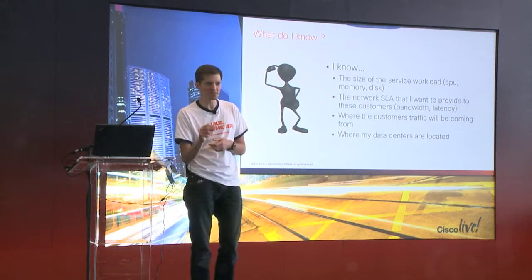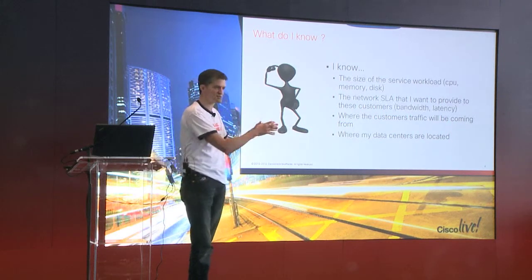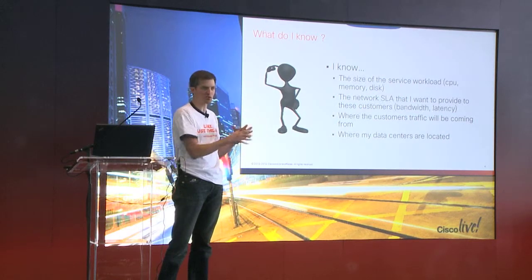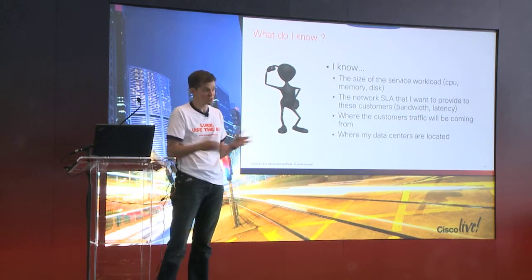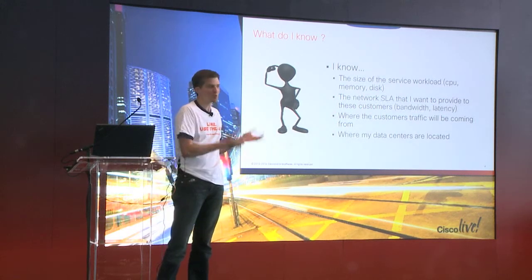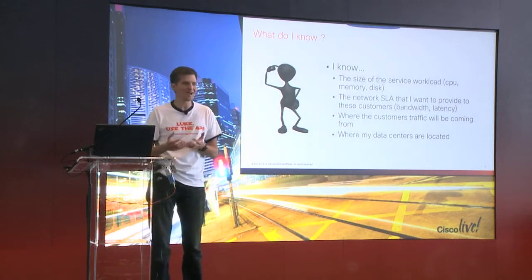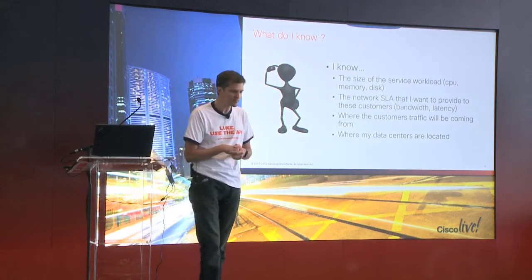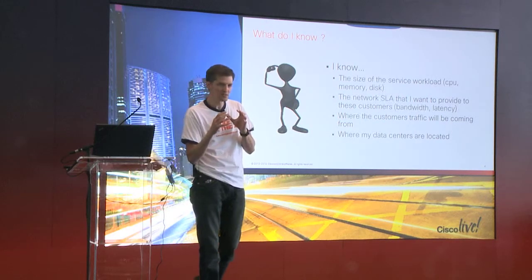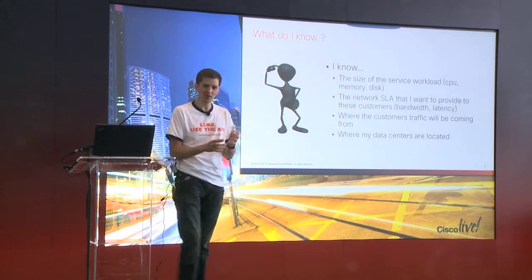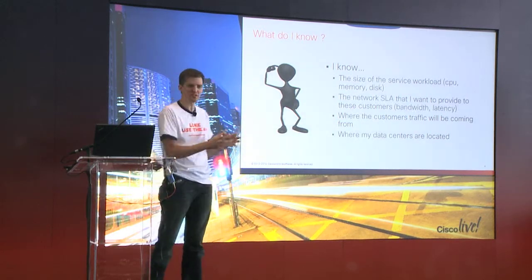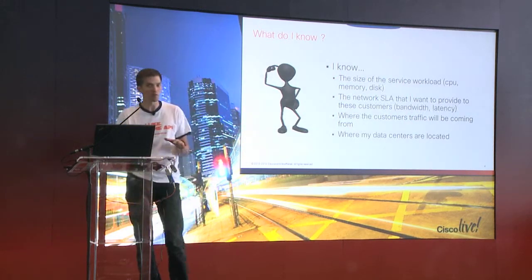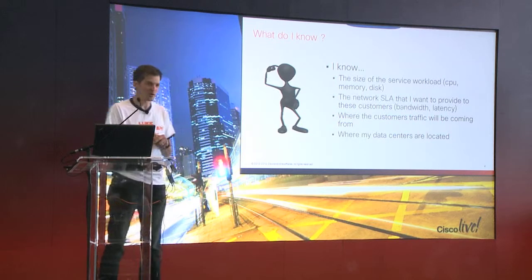We've also got a network SLA. If I'm going to place a workload supporting a particular application or service, somebody's going to be accessing it. So, where are they accessing it from, and how much bandwidth do I need to support them wherever they are? And I obviously know where all my data centers are, and I should also know my available network capacity.